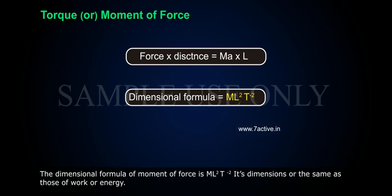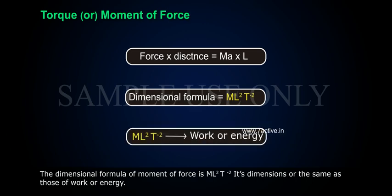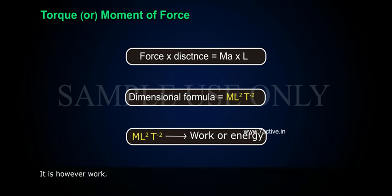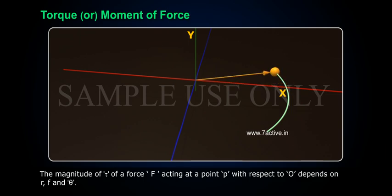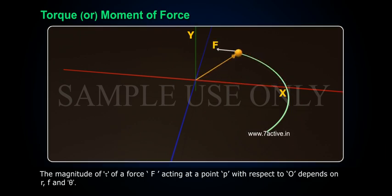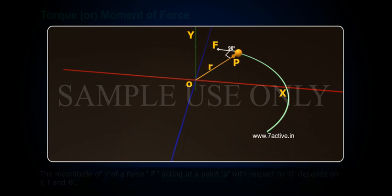The SI unit of moment of force or torque is Nm. The dimensional formula of moment of force is ML squared T inverse squared. Its dimensions are the same as those of work or energy; however, torque is not work. The magnitude of tau of a force F acting at a point P with respect to O depends on R, F, and theta.